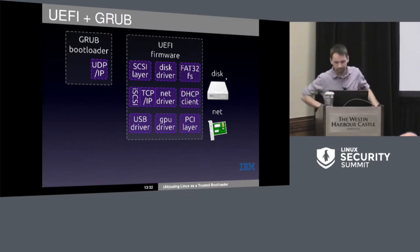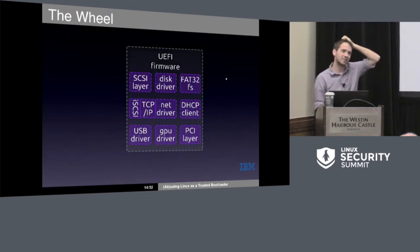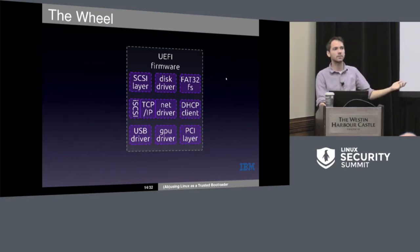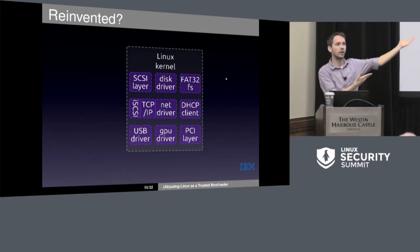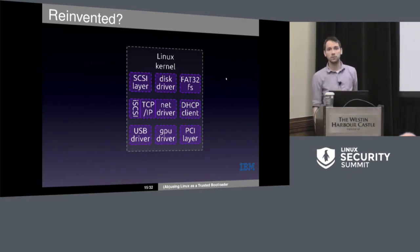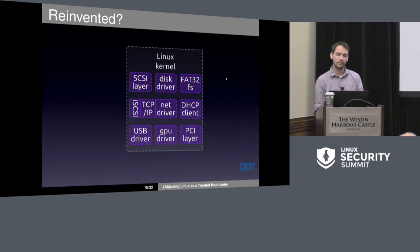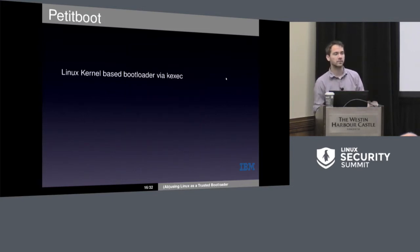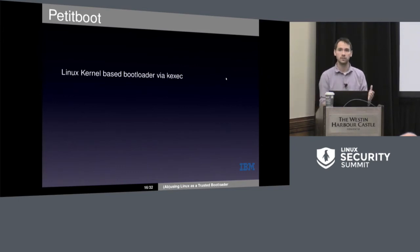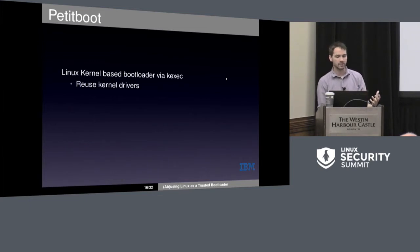That's kind of a lot. This is the kind of wheel that we've been spinning for this firmware. What we figured with Pettiboot is, why reinvent it? We already have all of this in the kernel, so why don't we just use the kernel? You reuse all these existing stacks to work as our bootloader. We use kexec to actually leverage the booting, just to swap from one kernel to whatever we happen to be booting. This also provides us the ability to just reuse the drivers.